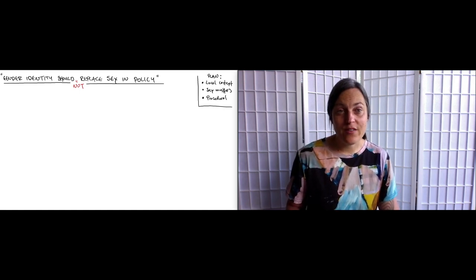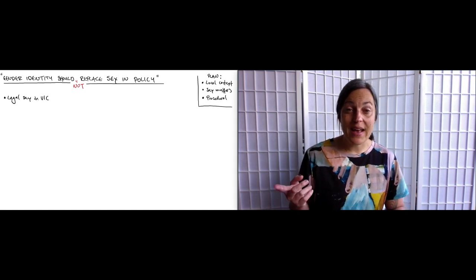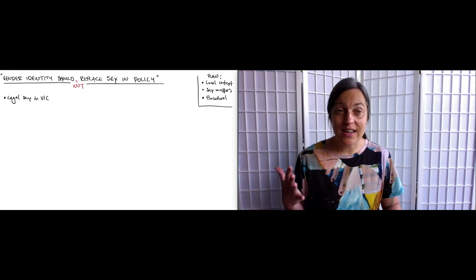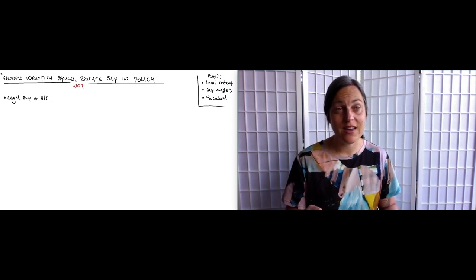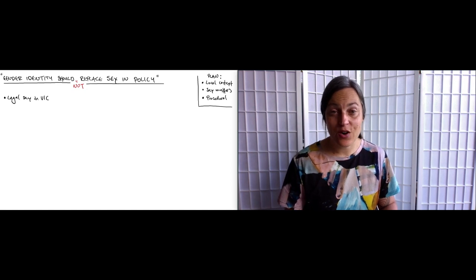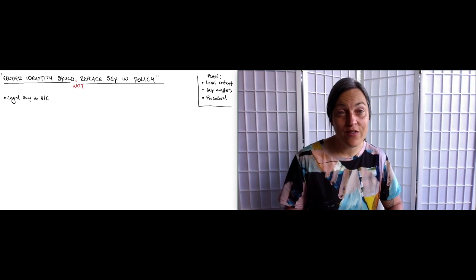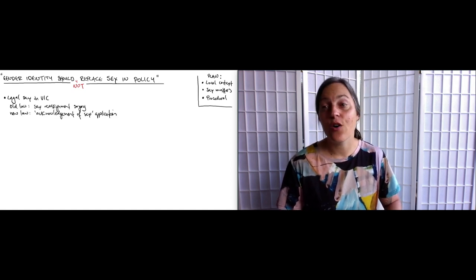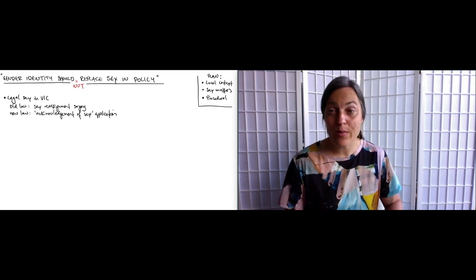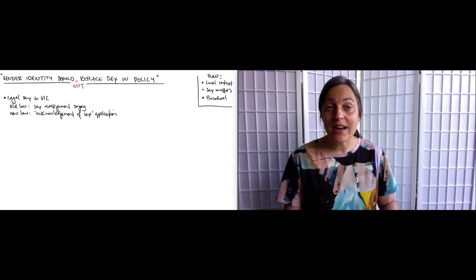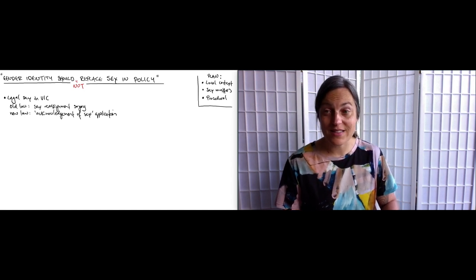First, some brief background about the situation in Victoria. Before May this year a person could change their legal sex, which means the record of their sex in the birth register, only if they had undergone sex reassignment surgery. Or to use the wording from the superseded version of the act, only if they had undergone a surgical procedure involving the alteration of a person's reproductive organs carried out for the purpose of assisting the person to be considered a member of the opposite sex.